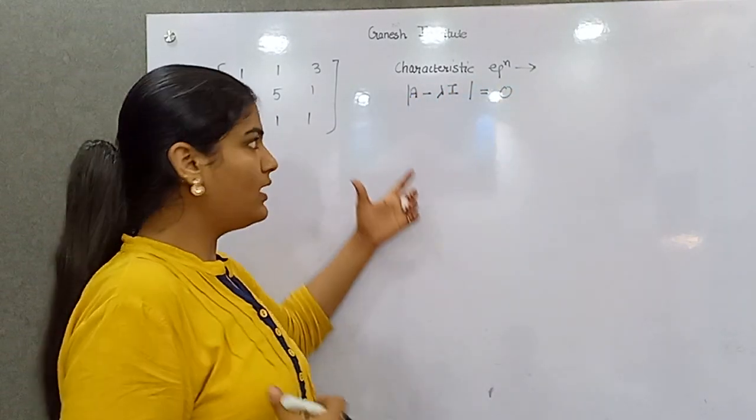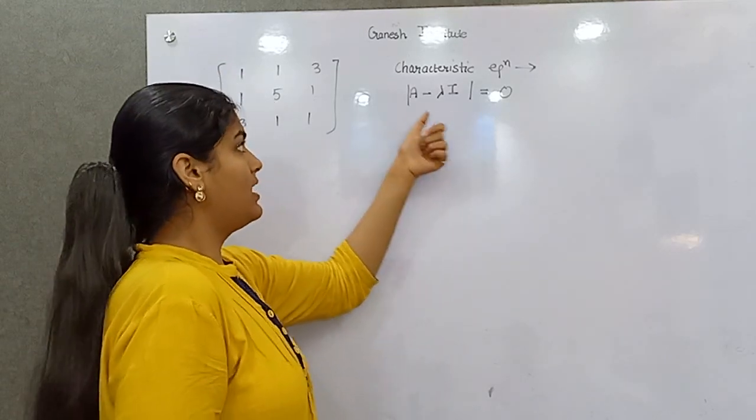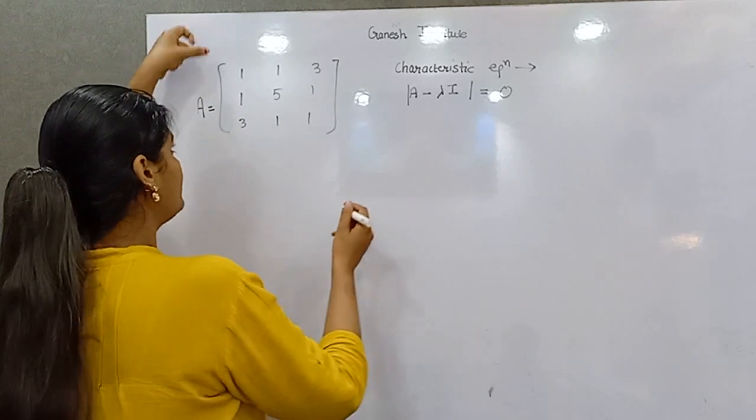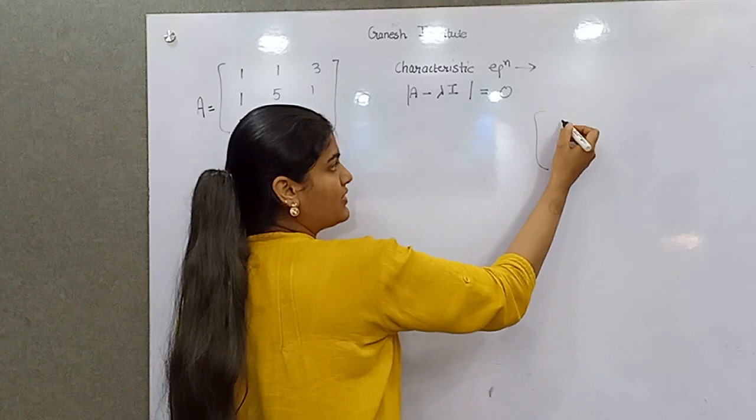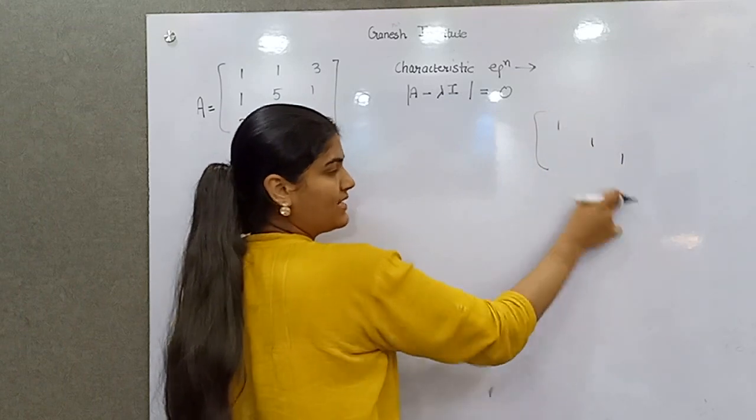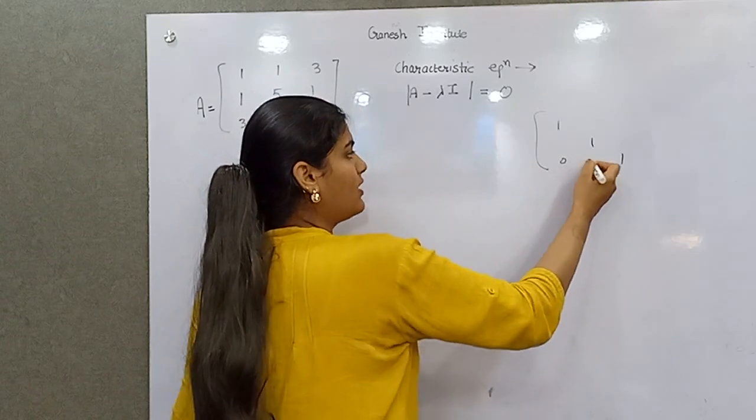This is what we take in terms of eigenvalues and eigenvectors. Your A value is this. If you know that identity matrix for 3 by 3 order is diagonal, diagonal is 1 and rest all other elements are 0.